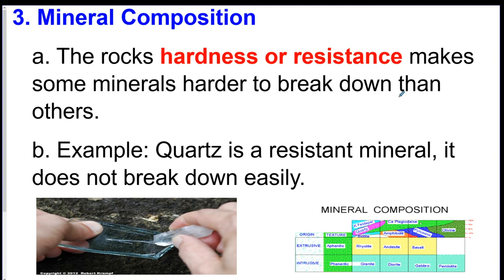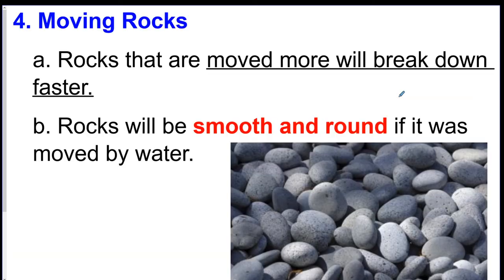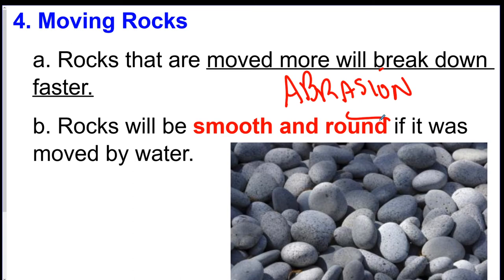The third thing is mineral composition. Things that have a high hardness are going to take longer to break down, like quartz. Quartz is a really hard mineral, so it doesn't break down easily. But if you have a rock made of talc, which is really, really soft, that's going to take a really short time to break down. The last factor is movement. If you have rocks that are moving around a lot, they break down faster because they're all hitting into each other. That's called abrasion — when rocks hit other rocks — and that's a form of physical weathering. The rocks become smoother and rounder when moved by water.